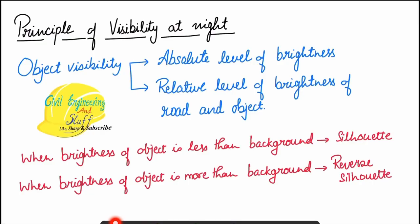So let us discuss the topic of this video: highway lighting. Before we move towards technical specifications, let us first discuss the principle of visibility at night. For an object to be visible, two parameters are taken into consideration. The first is the absolute level of brightness — how much brightness is present in the environment. In daylight there is ample sunlight so visibility is much better, while at night the absolute level of brightness is fairly low.